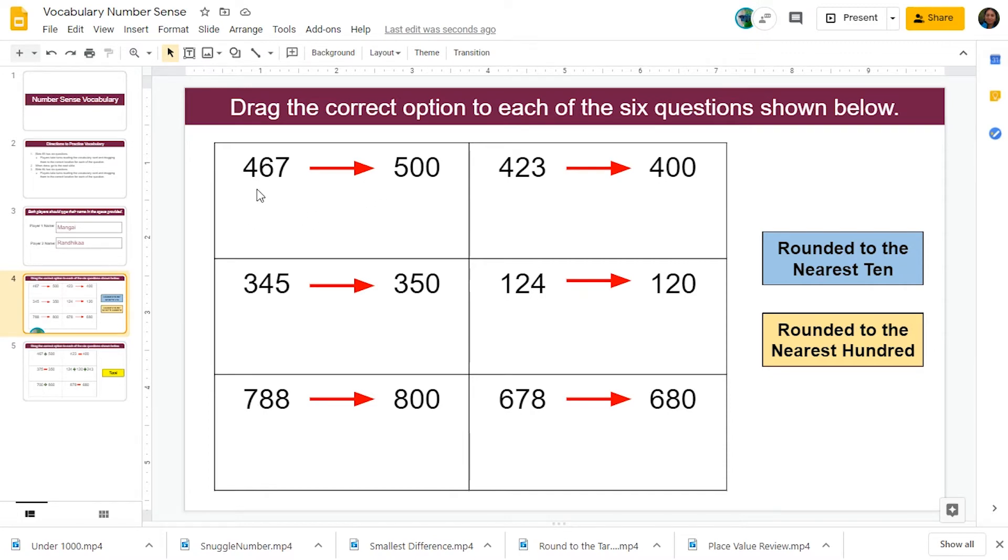To begin with, we need to see how the number four hundred and sixty-seven changed to five hundred. Did we round it to the nearest ten or did we round it to the nearest one hundred? Once we choose the correct option, we need to drag that card to the right location.